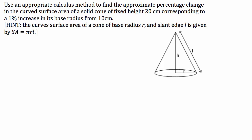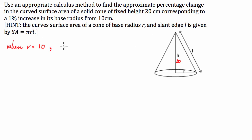Let's write down what we know. We know that we have a fixed height of 20 cm, so H is equal to 20. And we know we've got a base radius that's going to be varying from 10 cm. We're given the 1% increase in the base radius from 10 cm, so when the radius is equal to 10, the percentage change in the radius — using the incremental formula or small changes method — is delta R over R equals 0.01.